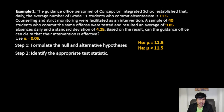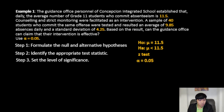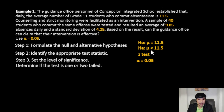Step 2: identify the appropriate test statistic. Since the sample size is greater than 30, we use the Z-test. Step 3: set the level of significance at alpha equals 0.05. Next, determine if the test is one-tailed or two-tailed. We look at the alternative hypothesis — since it points to the left (mu less than 11.5), we use a left-tailed, one-tailed test.